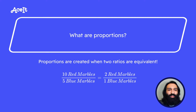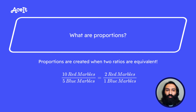Remember how we had 10 red marbles over 5 blue ones, and then we were able to reduce that to 2 over 1? We can say that those are proportional because in simplest form they are the same. In real life, proportions can be used to help adjust a recipe based on how much you want to make.